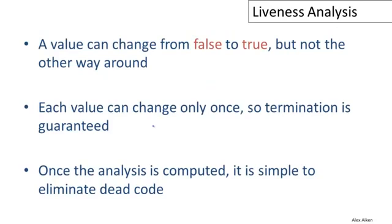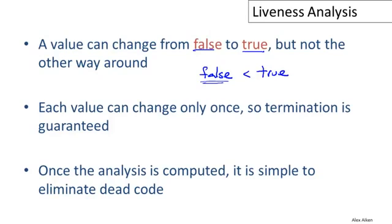From this example we can see that values change from false to true, but not the other way around. Every value starts at false and can change at most once to true — liveness becomes true and then won't ever change back to false. Going back to orderings: we only have two values, false and true, and the ordering is false less than true. Everything starts at the lowest element of the ordering and only moves up. Since each value can only change once, termination is guaranteed — eventually we have consistent information throughout the control flow graph.